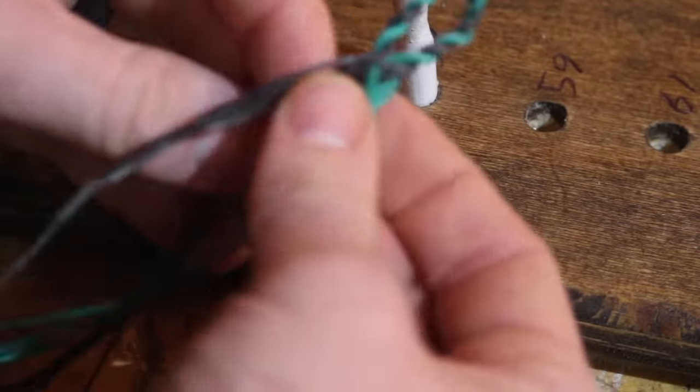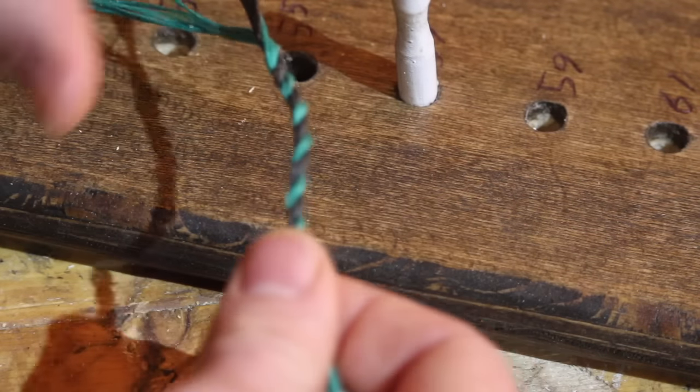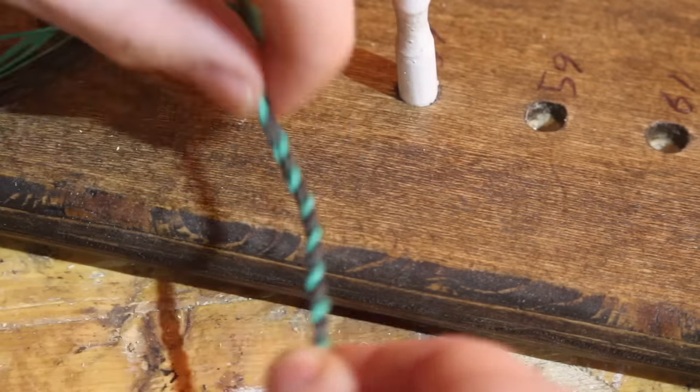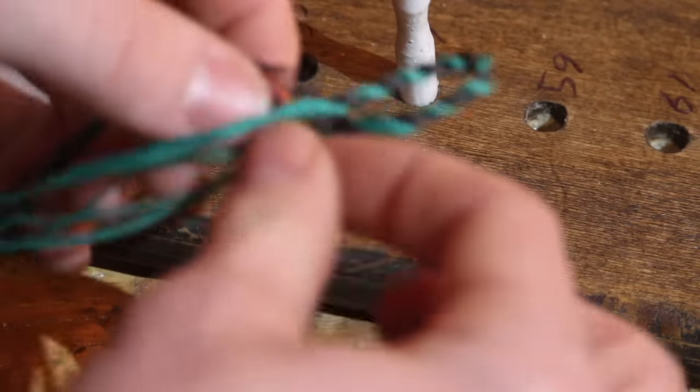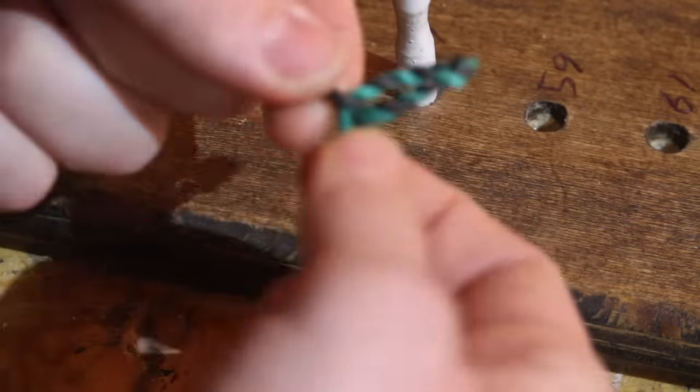But the top loop we slide up and down when we string the bow. So I'll make the bottom loop about two inches and then the top loop I'm going to make about three.